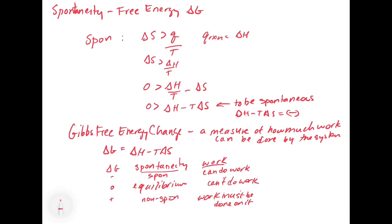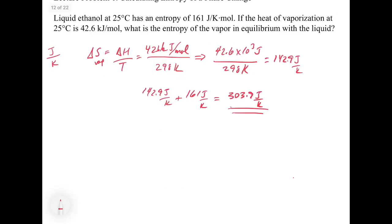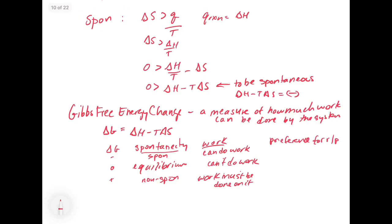We can also think about the preference for reactants and products. If delta G is negative and the reaction is spontaneous, it's going to want to go in the forward direction and produce products. If delta G is positive, the reaction is not spontaneous in the forward direction, so the reverse direction must be spontaneous — it will want to produce reactants. At equilibrium, the concentrations are fixed and the reaction goes back and forth with an equilibrium mixture.